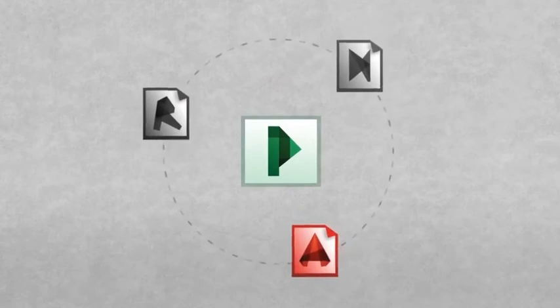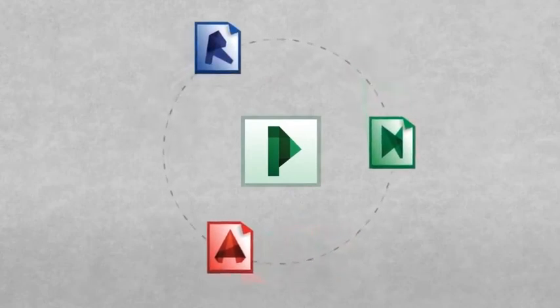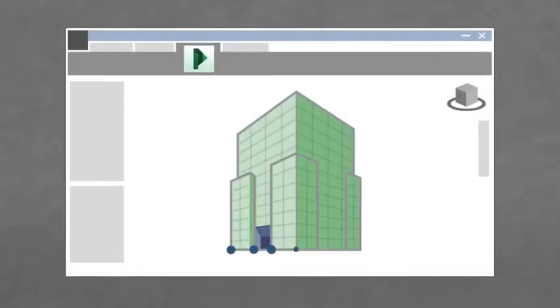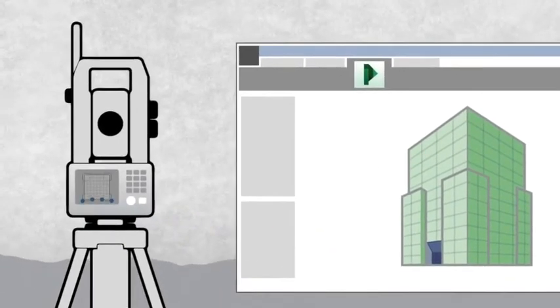Autodesk Point Layout is innovative software for the construction layout process. Point Layout integrates with Autodesk AutoCAD, Autodesk Navisworks, and Autodesk Revit software to automatically create points and transfer them to the robotic total station.